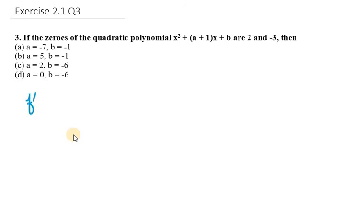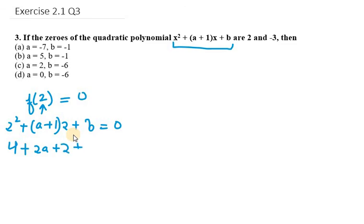The first one, f(2) = 0. So in this case we need to put this value, this is the x value into this polynomial. So it will be 2² + (a+1)(2) + b = 0. So we will get 4 + 2a + 2 + b = 0.